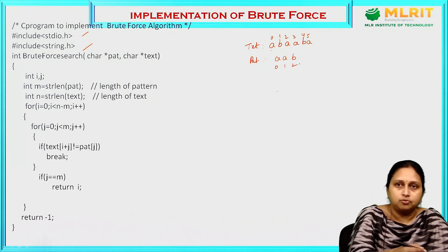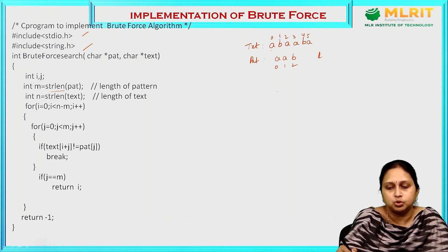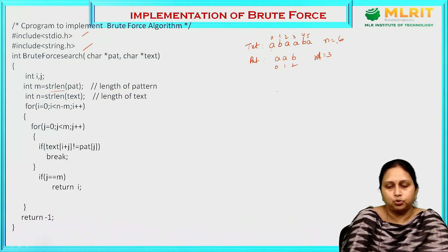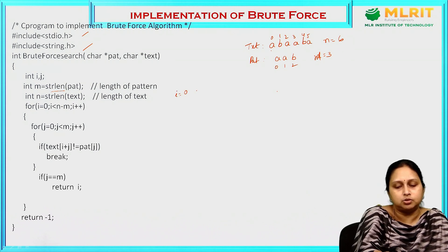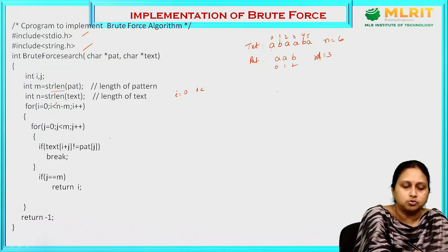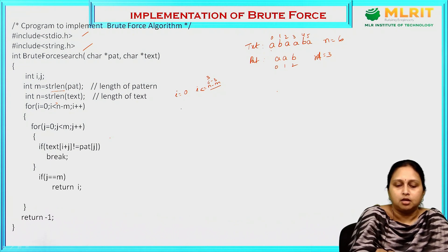Now let us start the tracing. m equals string length of pattern, so m equals 3. n equals string length of text, which is 6. Now how does the outer loop work? i starts at 0, condition is i less than or equal to n minus m, that is 6 minus 3 equals 3. So the outer loop repeats for i = 0, 1, 2, 3. The inner loop has j starting from 0, condition j less than m, which is 3.